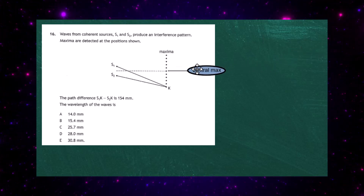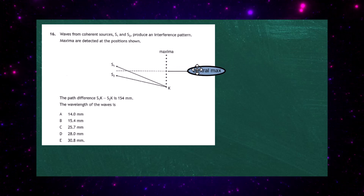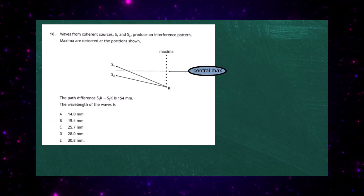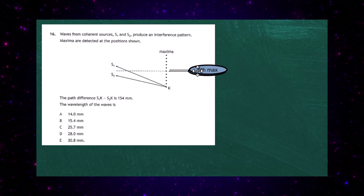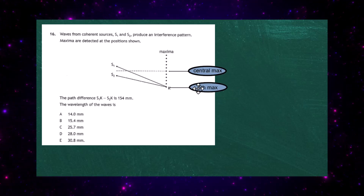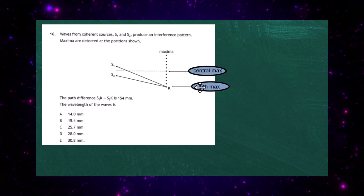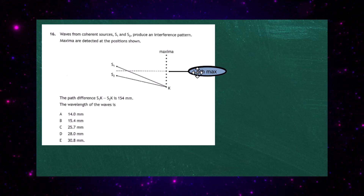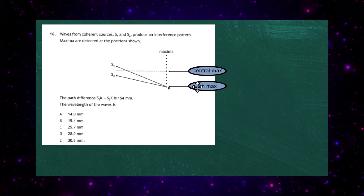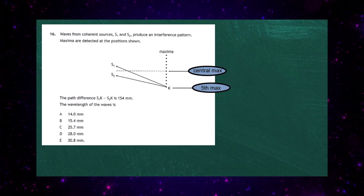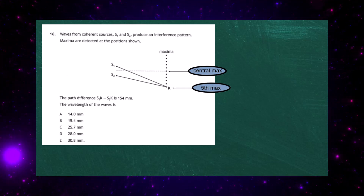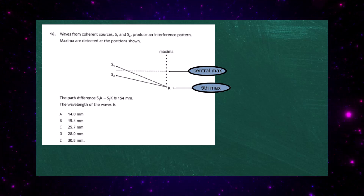Let's ascertain first of all the central maximum, and the one we're looking at, K — if you count down 1, 2, 3, 4, 5 — that's going to be the 5th maximum. You always count from after the central maximum: 1, 2, 3, 4, 5. So at position K we're really looking at the 5th maximum.